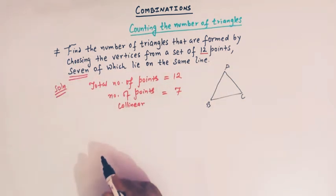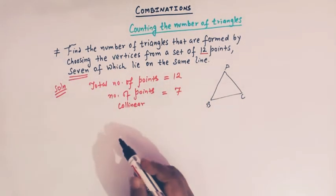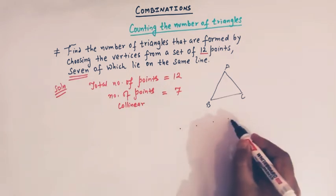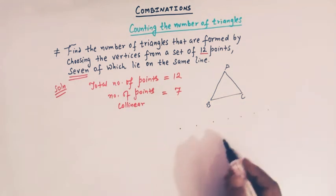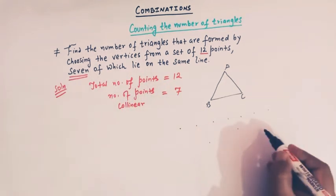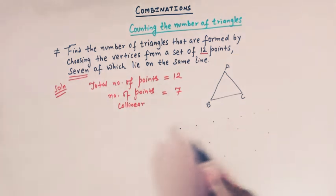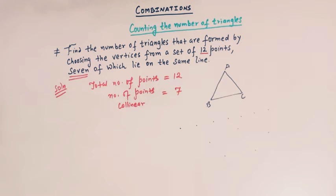A triangle ABC is formed by three non-collinear points A, B, and C. Now here we are given 12 points, and out of the 12 points, 7 lie on the same line. Let us take the seven points like this — one, two, three, four, five, six, seven — these seven points lie on the same line, and the other five points may look like this. This is the picture.